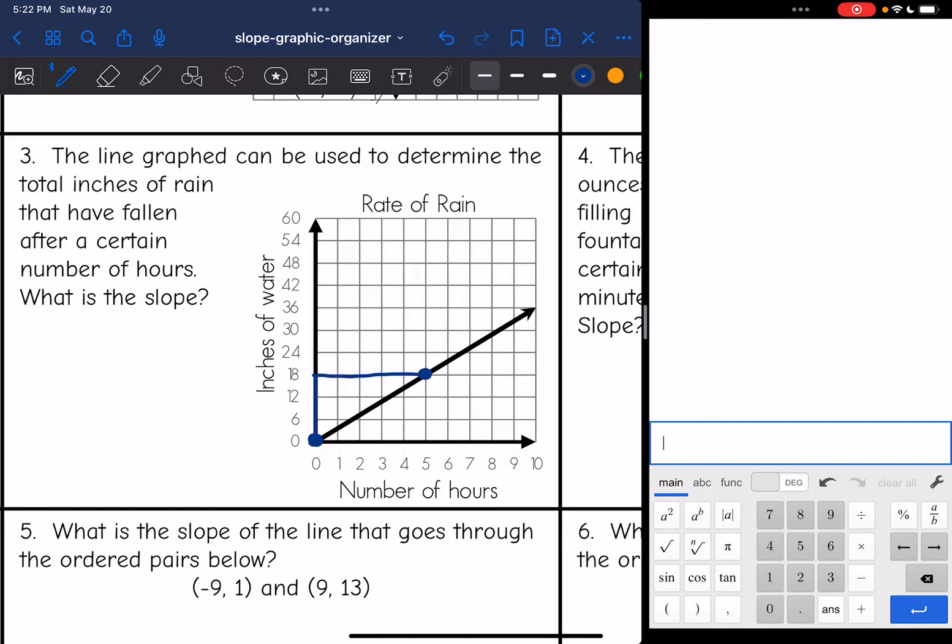And my rise is one, two, three spaces. But remember, we're counting by sixes. So it's going to be six, 12, 18 for the rise.